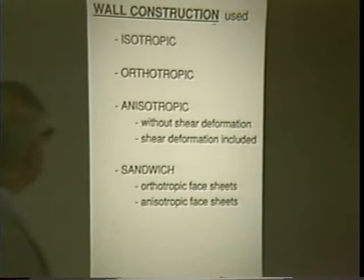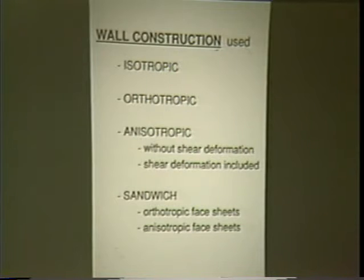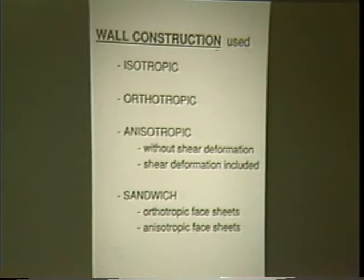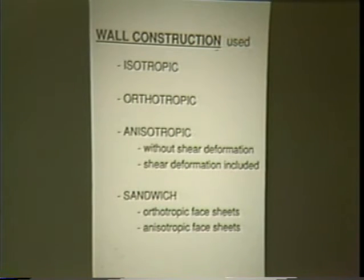By different types of wall construction: the simplest is isotropic — you take a sheet of metal, wrap it around, and you have a cylindrical shell with the same material properties everywhere. You can get orthotropic if you put external stringers on it, giving different stiffness in each direction. You can use composites, giving anisotropic properties depending on the layup. You can include or exclude shear deformation, and finally there is sandwich construction, which can also have orthotropic or anisotropic face sheets.